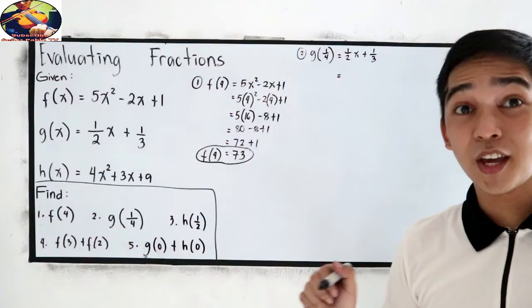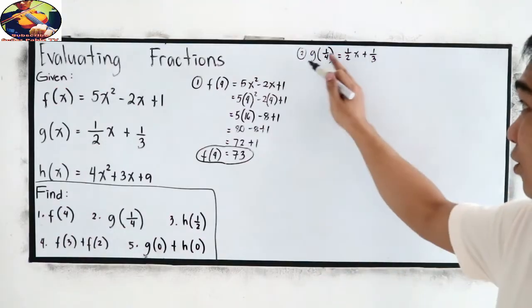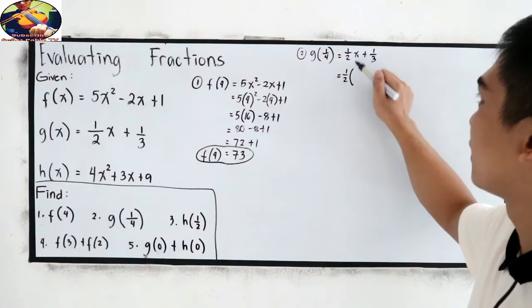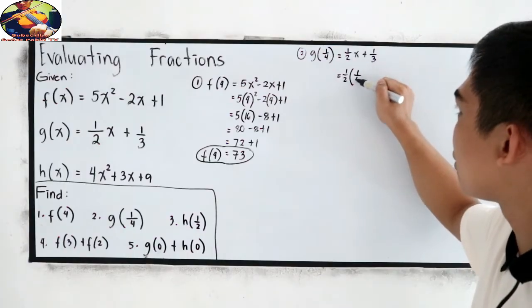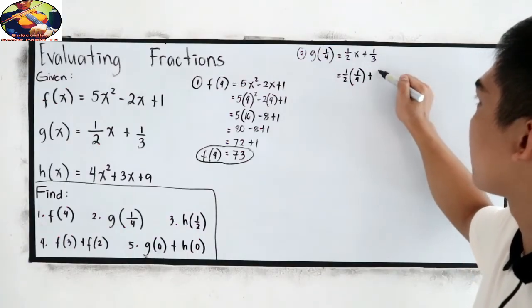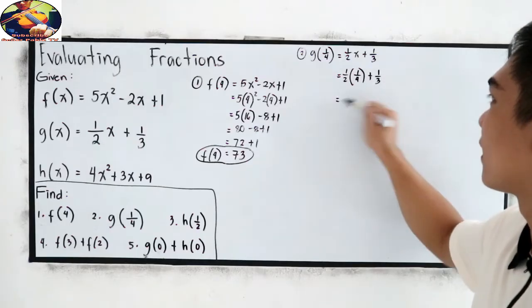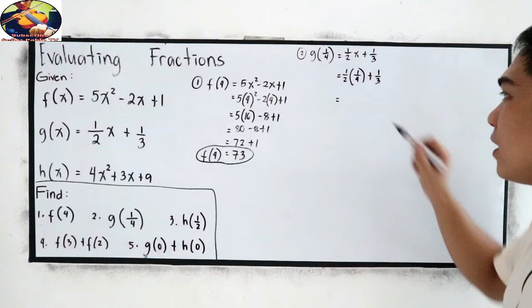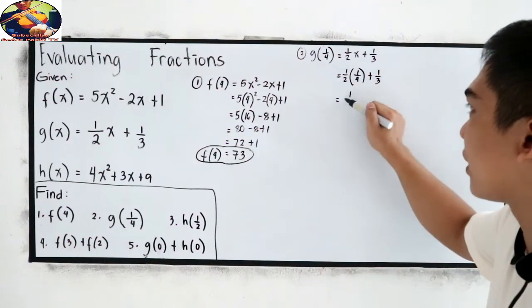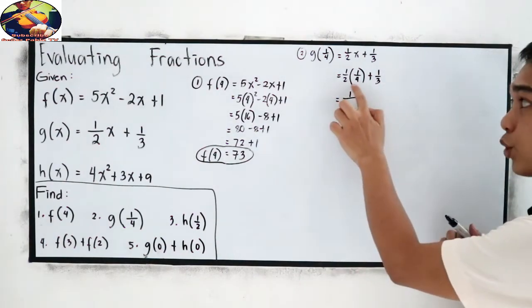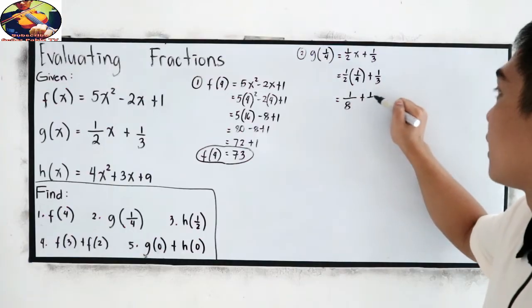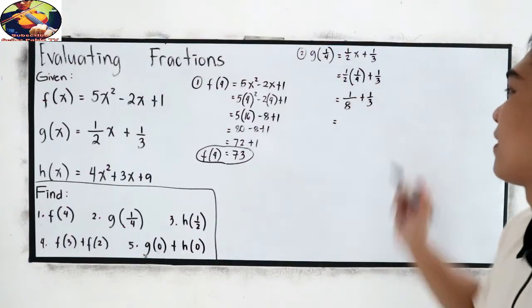Now, change x to the given value, which is 1 fourth. Copy 1 half, then change to 1 fourth plus 1 third. Fraction. So, 1 times 1, numerator to numerator, over 2 times 4, which is 8 plus 1 third.